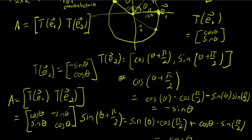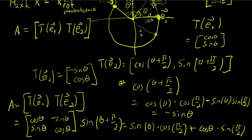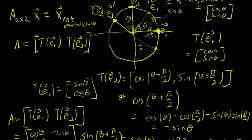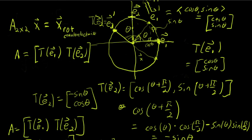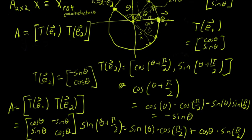Just like we found a matrix for a counter-clockwise rotation of theta, we can also find one for a clockwise rotation of theta. All we do is consider what happens to the standard basis vectors E1 and E2 — where do they end up when you rotate clockwise by theta? You look at where E1 ends up and where E2 ends up, and that's basically how you go about doing that.